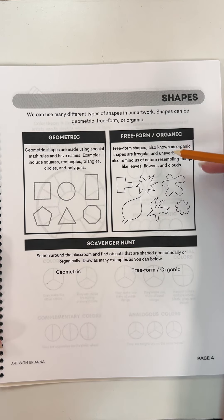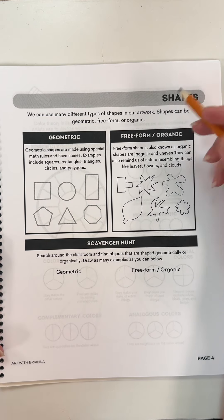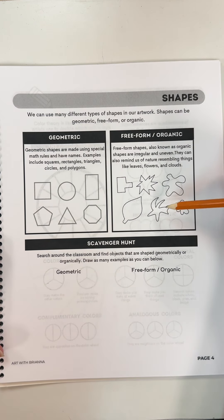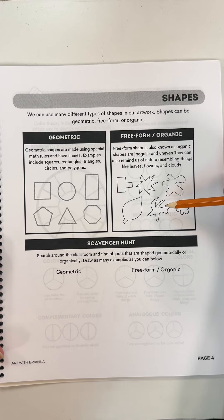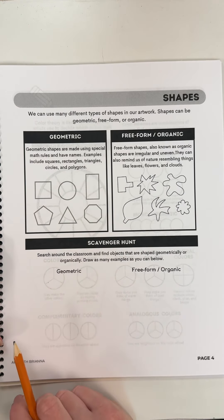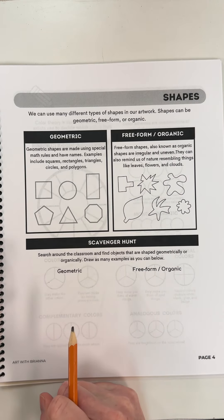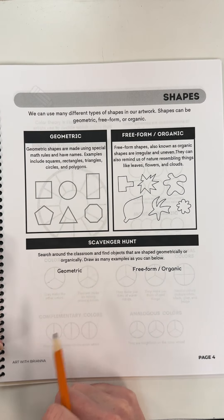We also have freeform or organic shapes. They're irregular and uneven, and they can remind us of nature, resembling things like leaves, flowers, and clouds. Here are some examples of organic or freeform shapes. Look around the room and see what shapes you notice.